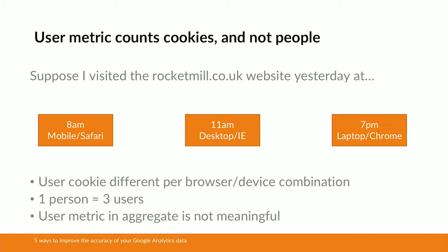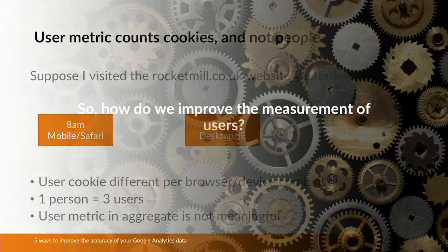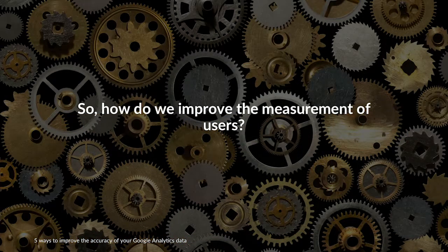So the users metric in aggregate isn't really that meaningful. It's not telling us the number of people, it's not telling us the number of sessions — in fact it's not really telling us a great deal at all. So that begs the question: how do we improve the measurement of users within Google Analytics?